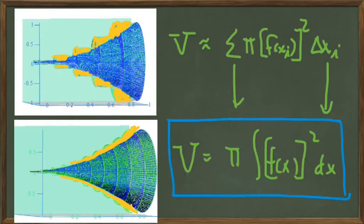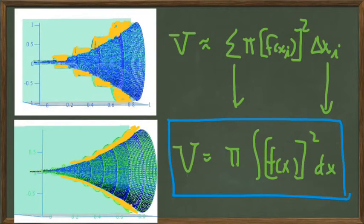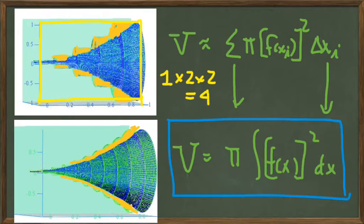If we look back at our figure here, just to get a rough idea of the accuracy, we've got this box in which our cone-shaped object fits. It is 1 unit wide, and it's 1 by 2 by 2, so it's 4 square units.